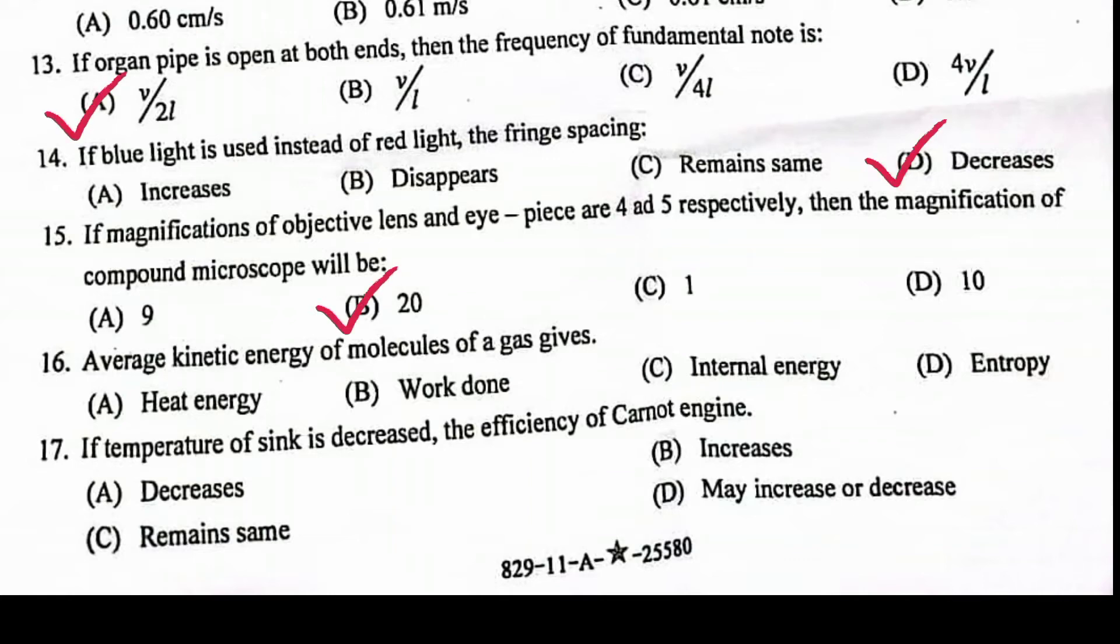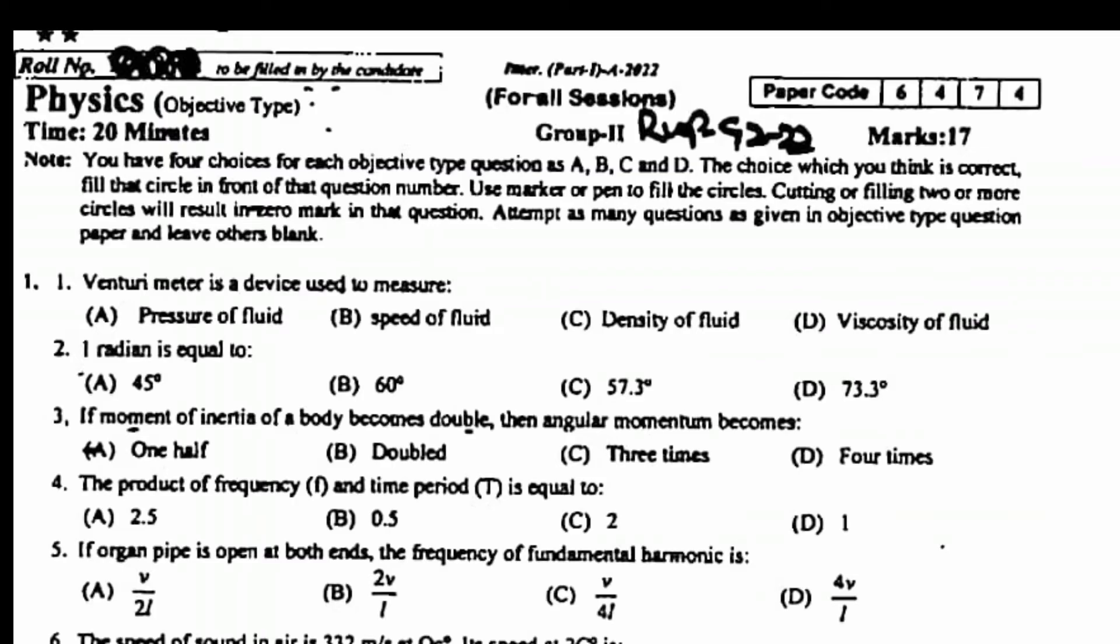Average kinetic energy of molecules of a gas gives internal energy. If temperature of sink is decreased, the efficiency of Carnot engine increases. Venturi meter is a device used to measure speed of fluid.